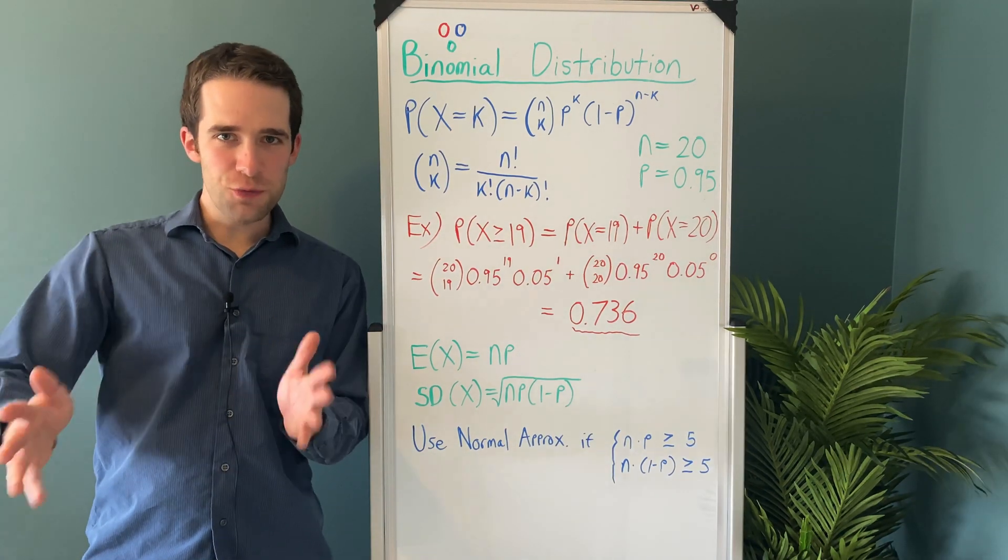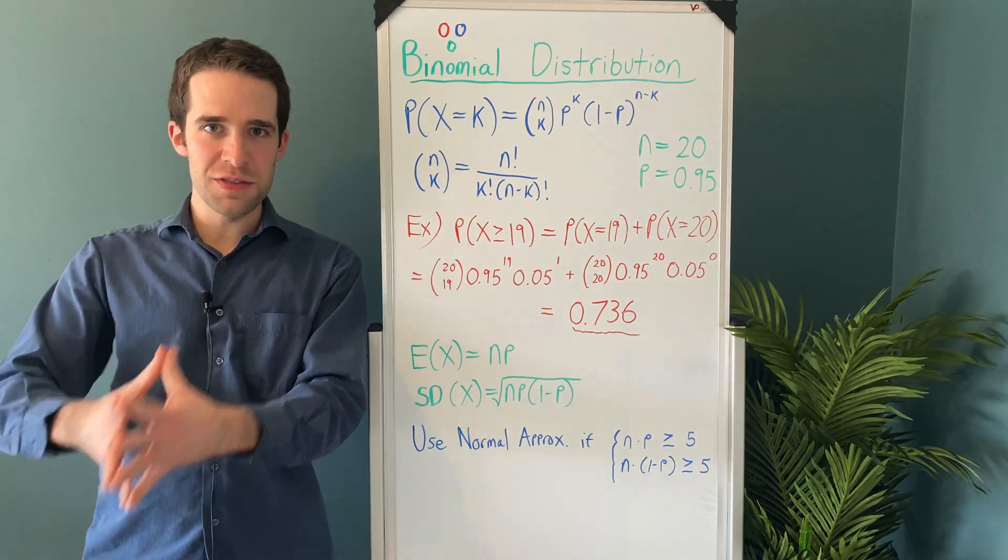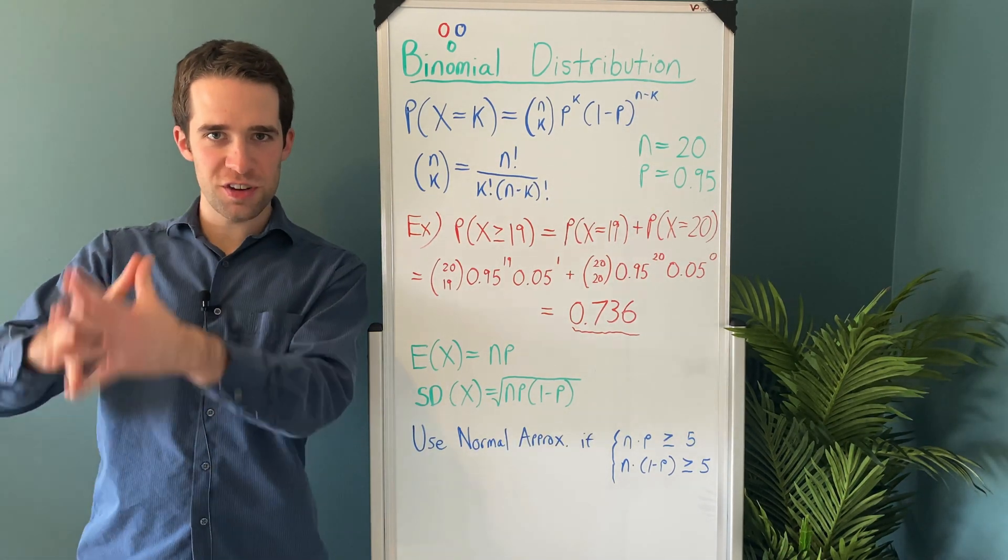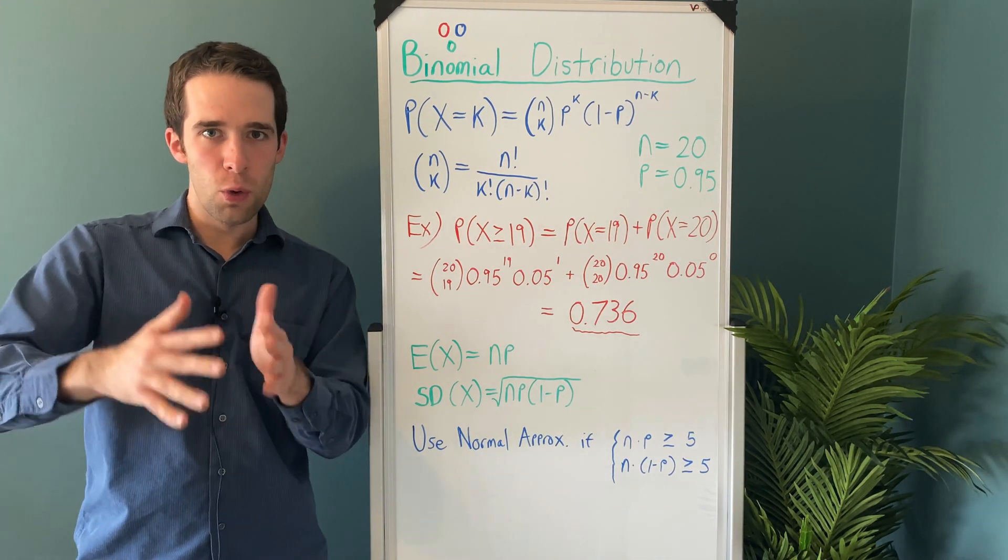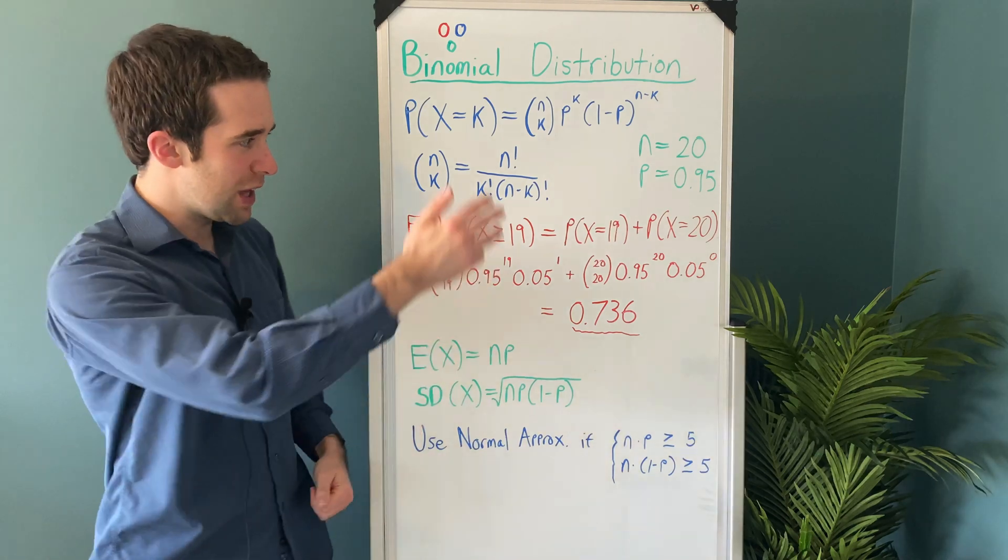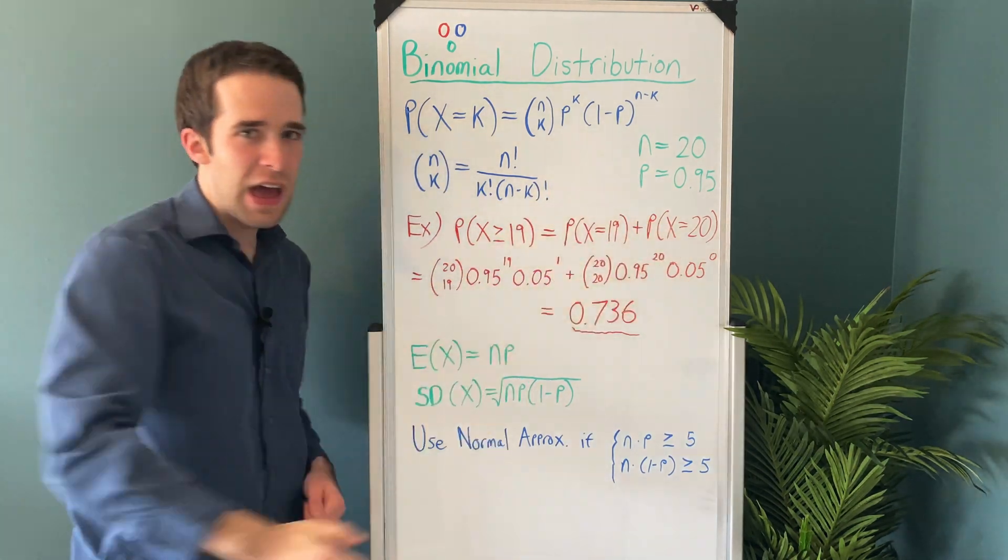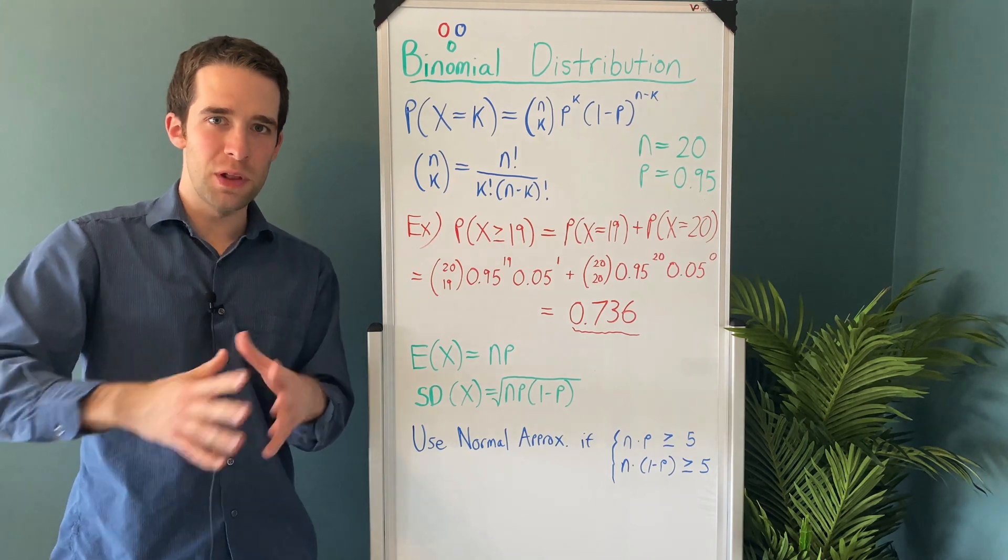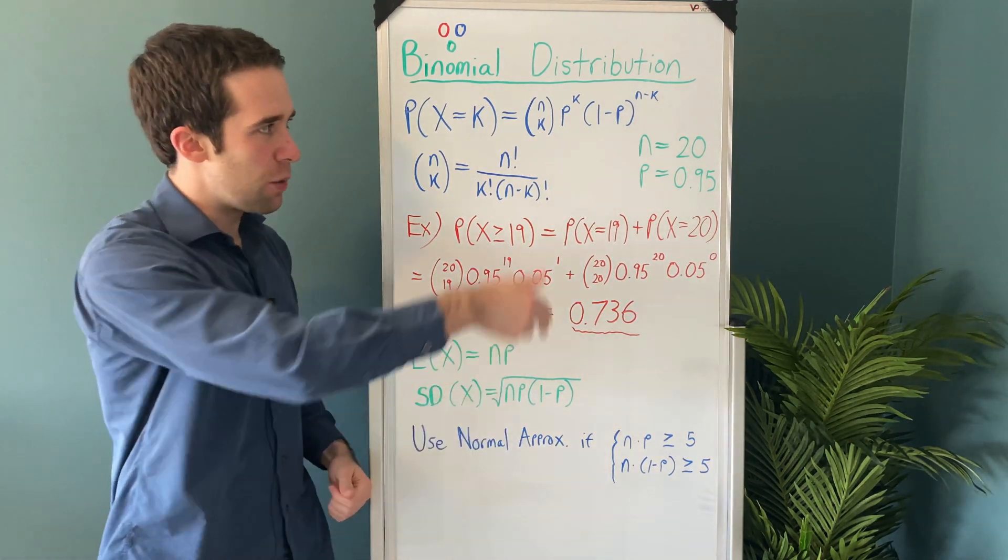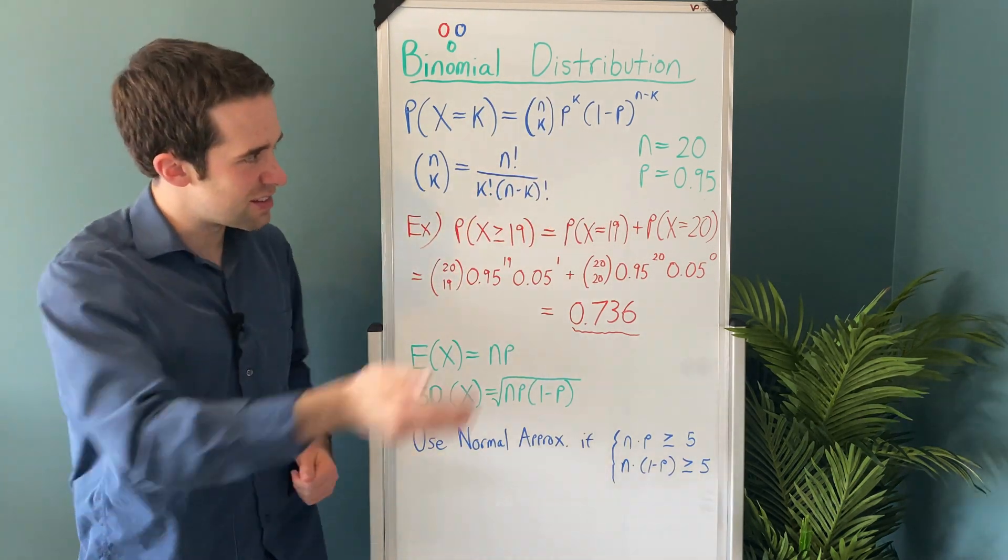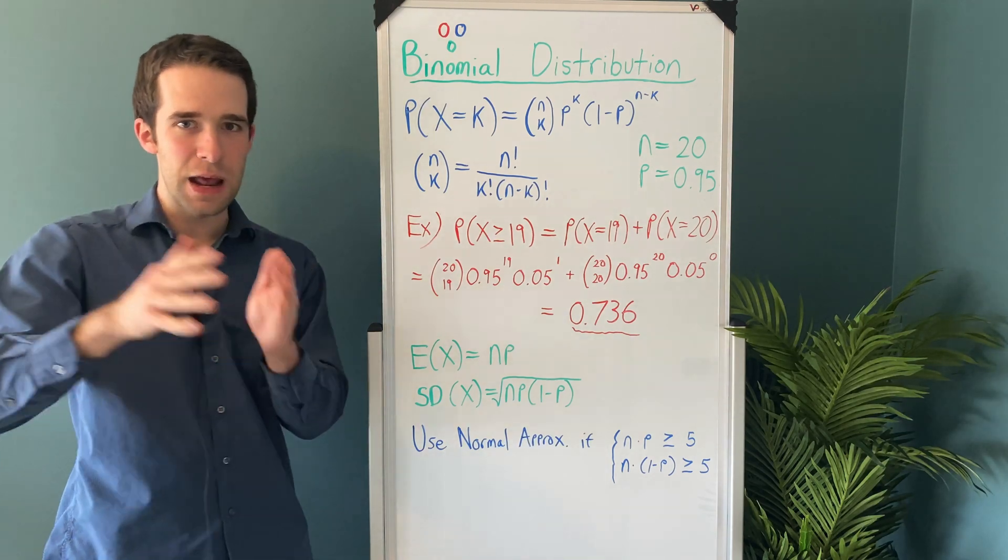Now that we understand this formula, we can apply it. Remember we wanted to know the probability that no more than one person dies. Now this is the exact same thing as saying 19 or more people survive. So we could have 19 people survive, or we could have 20 people survive. And we're going to run the binomial formula for k equals 19, and k equals 20. Remember that we have 20 different trials. The probability of success is 0.95. So all we really need to do is plug in n and p,